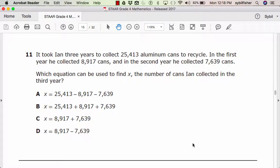Which equation can be used to find x, the number of cans Ian collected in the third year? A, X equals 25,413 minus 8,917 minus 7,639. B, X equals 25,413 plus 8,917 plus 7,639. C, X equals 8,917 plus 7,639. Or D, X equals 8,916 minus 7,639.